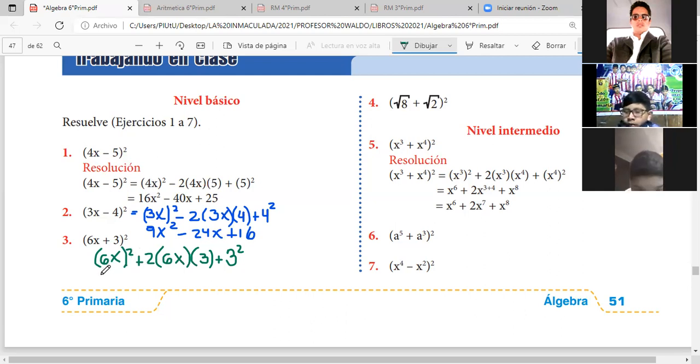6X al cuadrado será 36X al cuadrado, más 2 por 6 es 12, 12 por 3 es 36X acompaña la variable X, más 3 al cuadrado que es 9. Listo, se acabó.